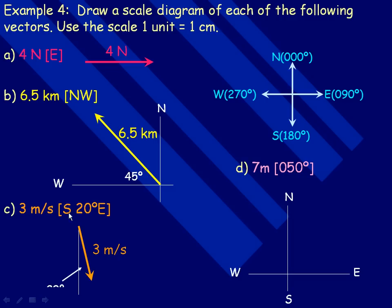For C, 3 meters per second south 20 degrees towards the east means, okay, this would be straight south. So this angle right here is 20 degrees. We're 20 degrees towards the east from directly south. And of course, if it's 3 meters per second, then I would make that 3 centimeters long.